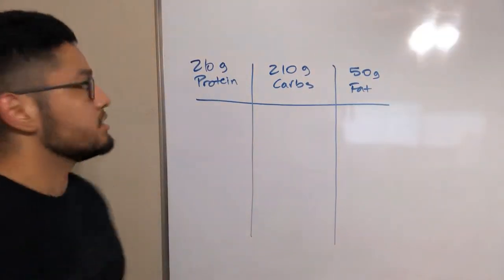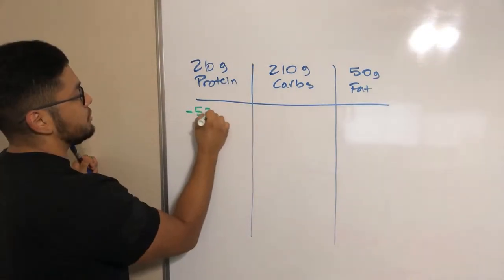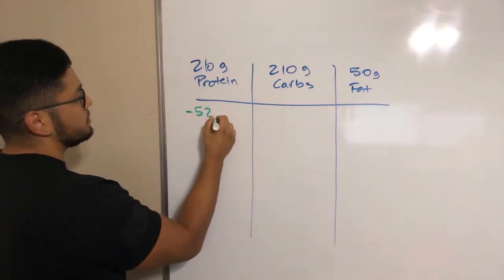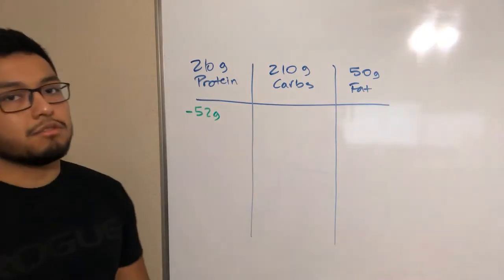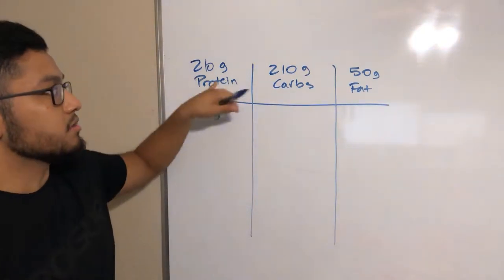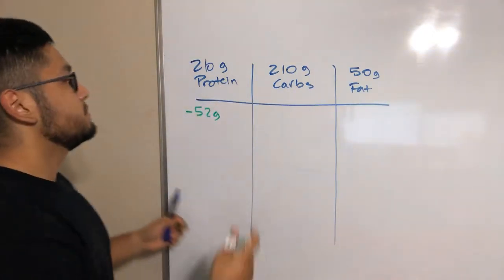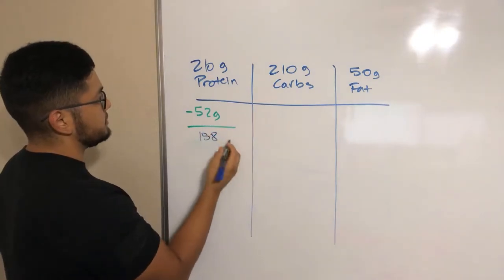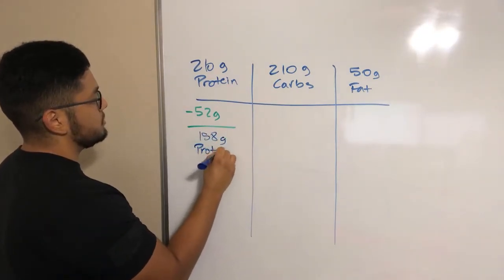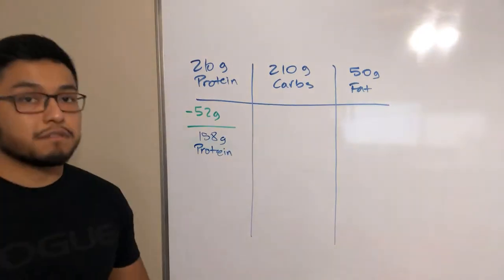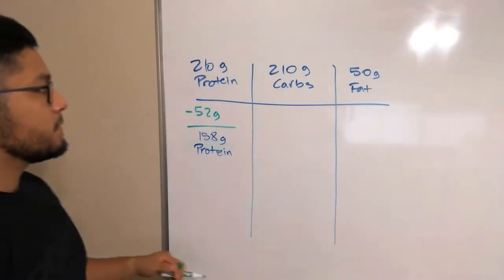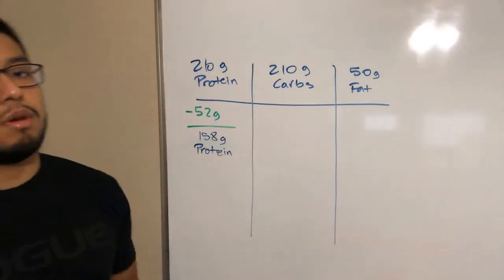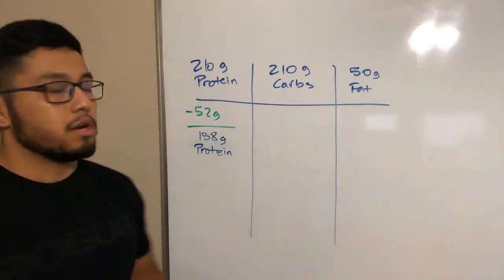Okay, MyFitnessPal says eight ounces has 52 grams of protein. Cool, so you eat eight ounces of chicken breast and then you are down 52 protein dollars. So you take away 52 grams of protein dollars from your protein account, and now you have 158 grams of protein left for the day after you ate that chicken breast.